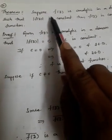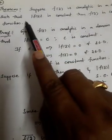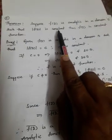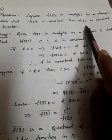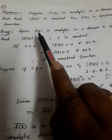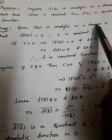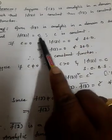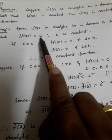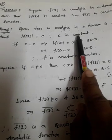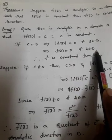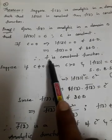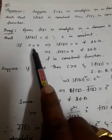Now we go to another theorem, which we will prove by making use of the above theorem. The theorem states: if f(z) is analytic in a domain D and |f(z)| is constant, then f(z) is constant. Given |f(z)| = C where C is a constant. If C = 0, then |f(z)| = 0, therefore f(z) = 0 for all z in D, so f is a constant function.